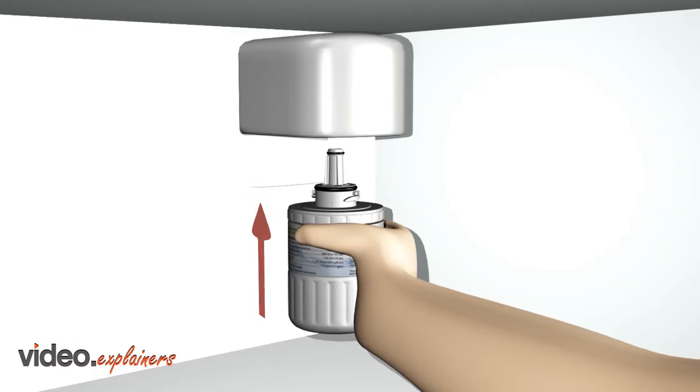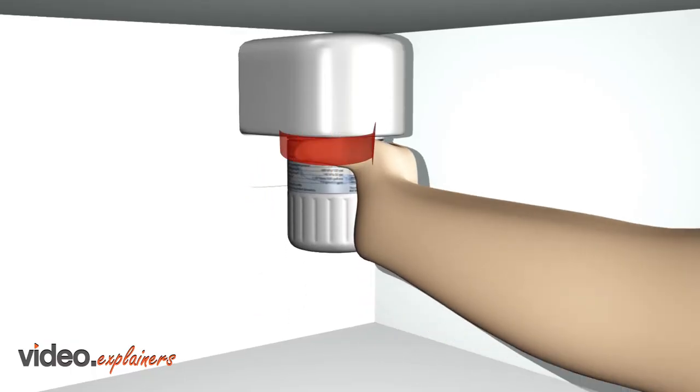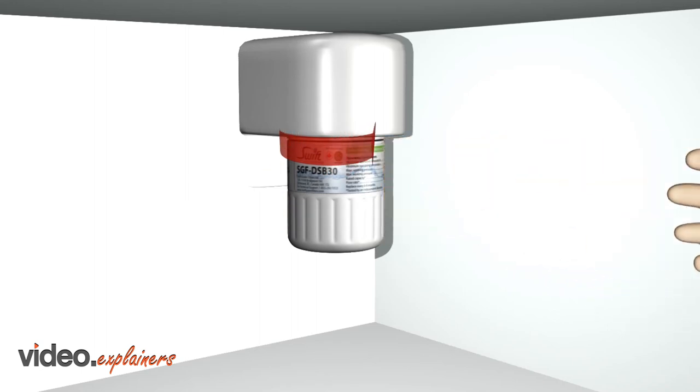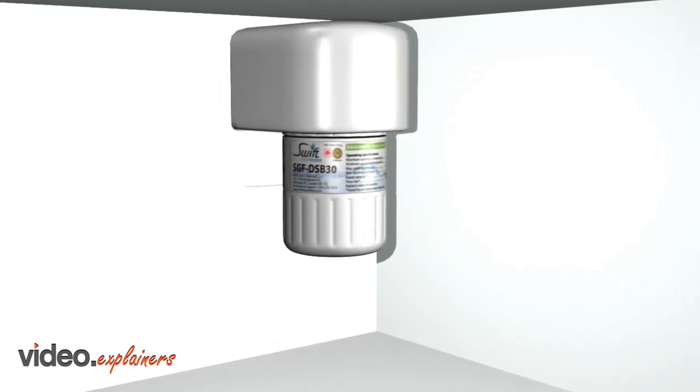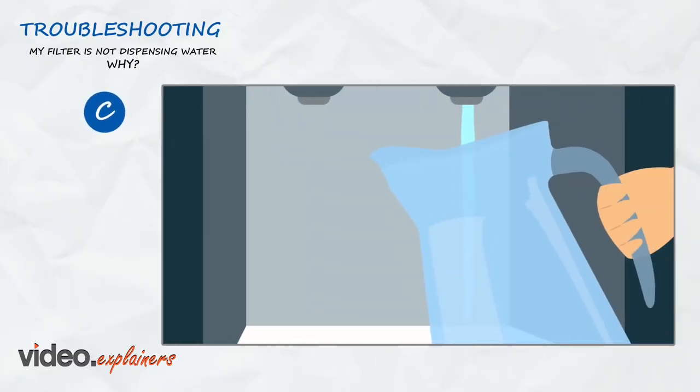Make sure you push the new filter into the receiver and firmly turn it to the right. Refer to your installation guide if your filter does not install this way. Hold down the dispenser to let out any air that may have gotten in the line.